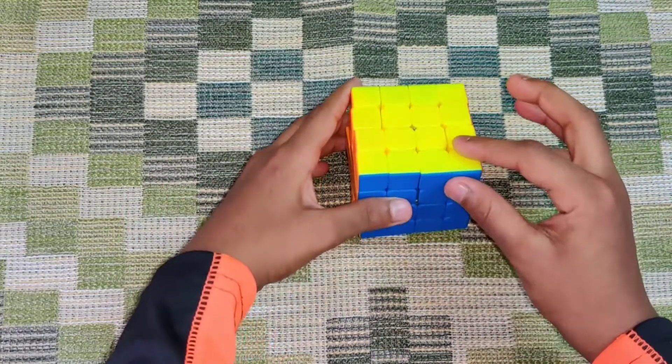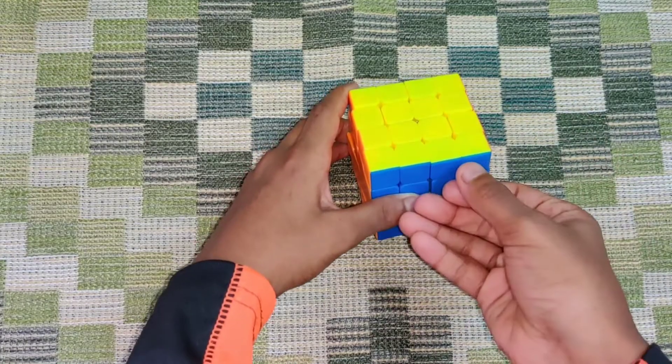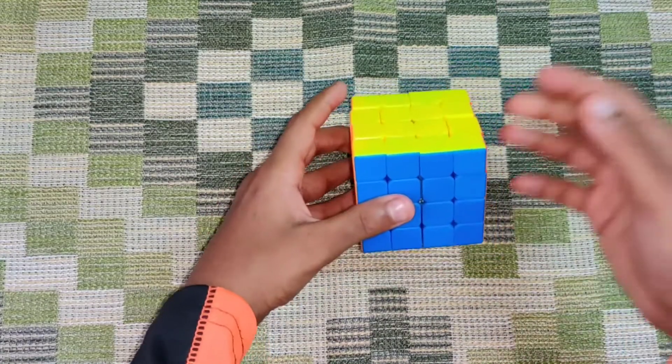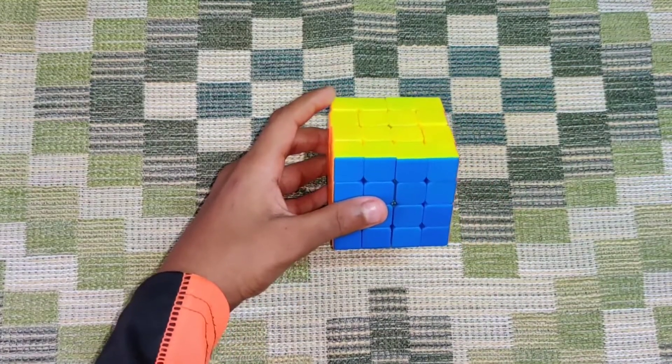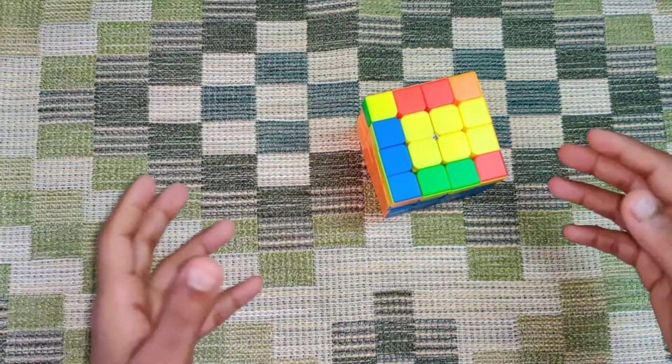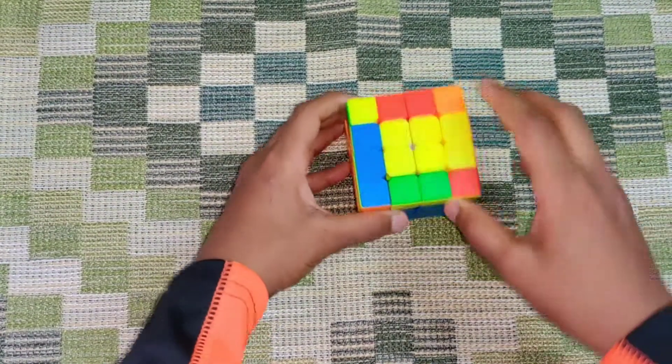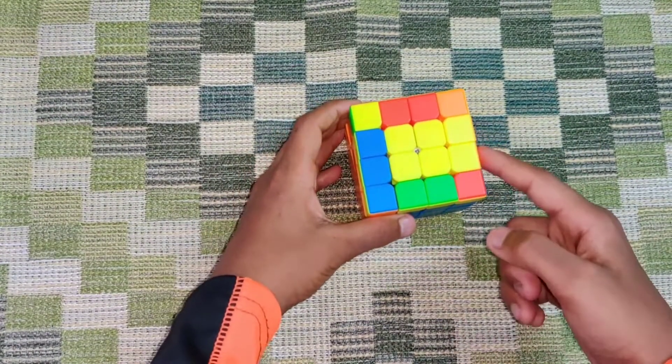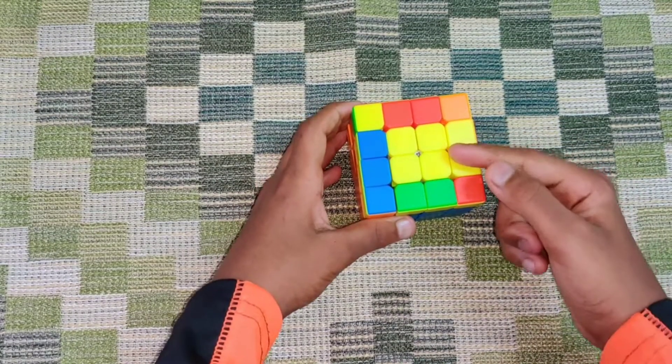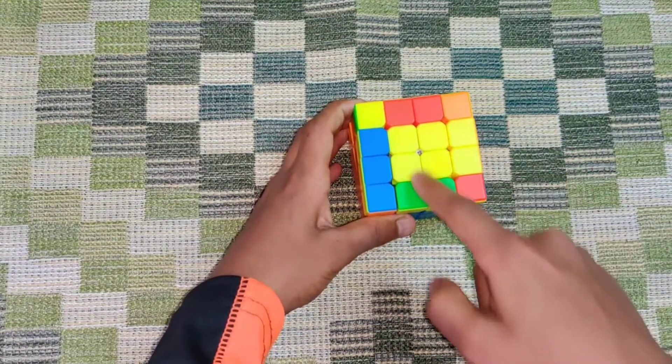Most of the time it won't look like what I just showed you with these four pieces flipped around. It will look something like this. A lot of the times your OLL parity will look like this. This case is not possible on a 3x3. Only one edge cannot be facing up, as well as if there's three edges facing up, that is also not possible on a 3x3.